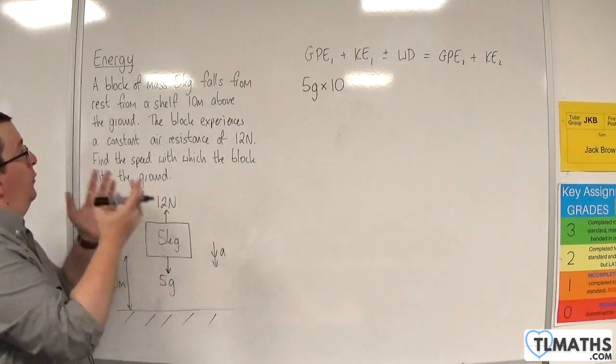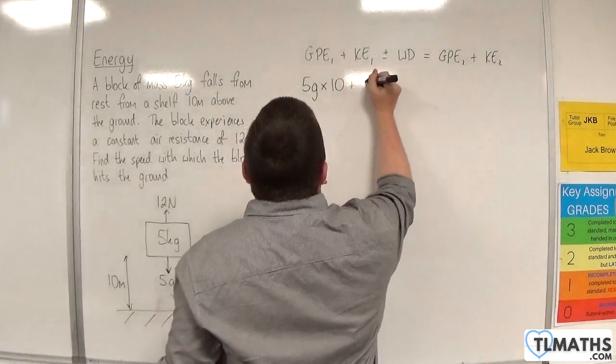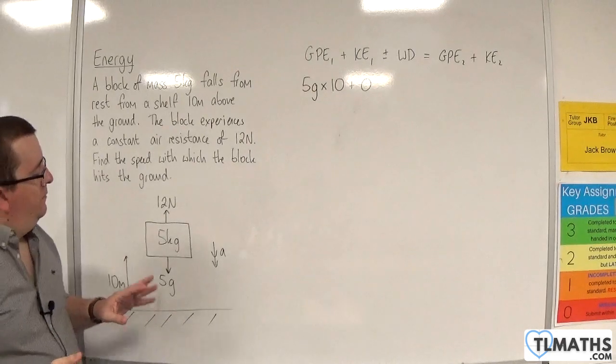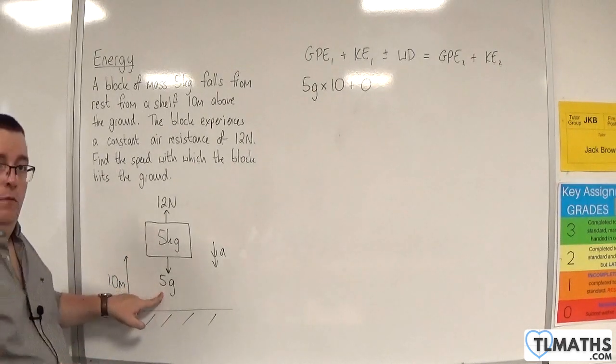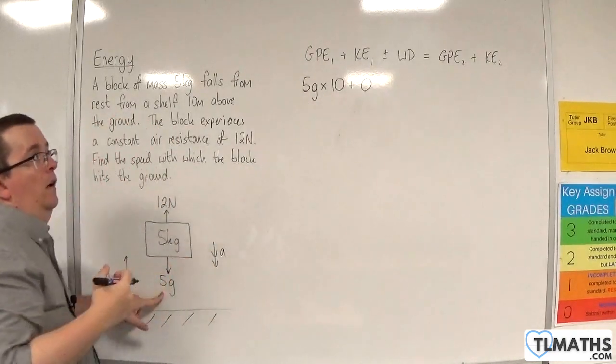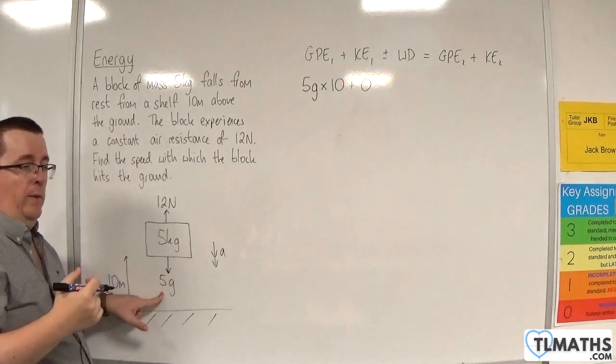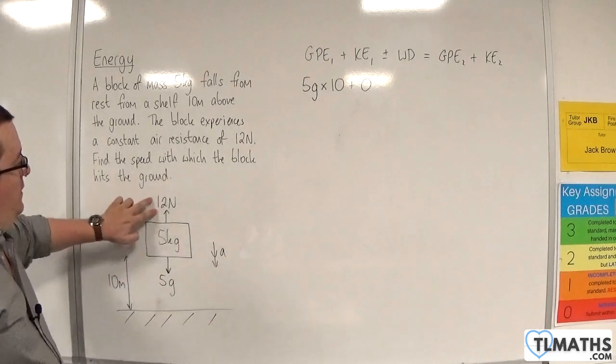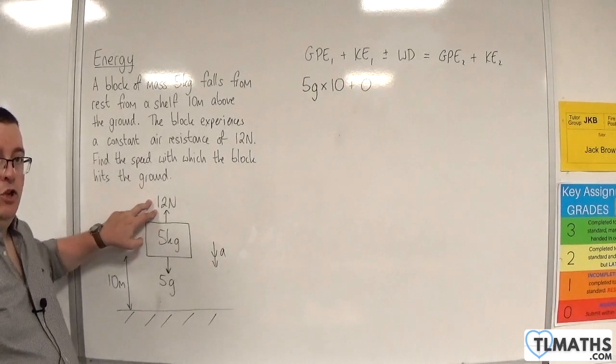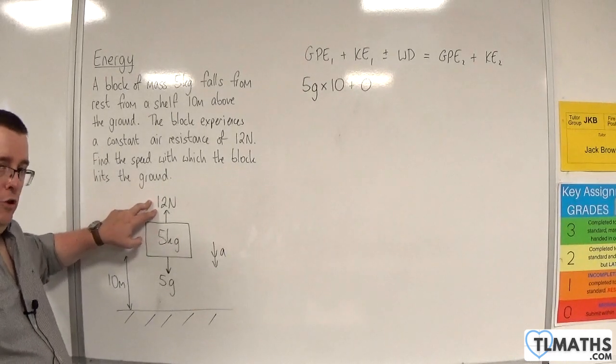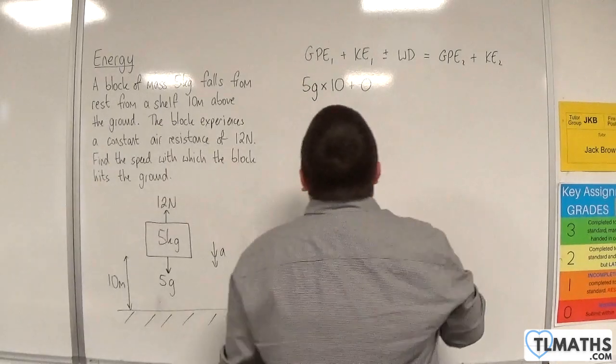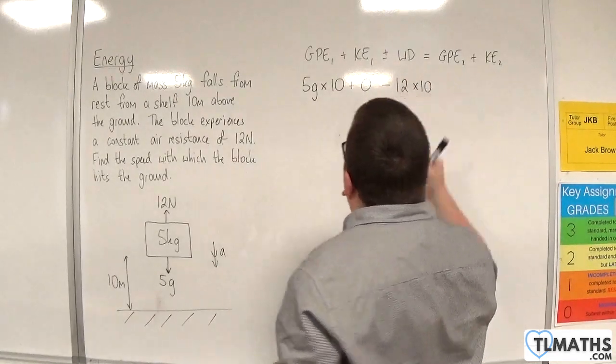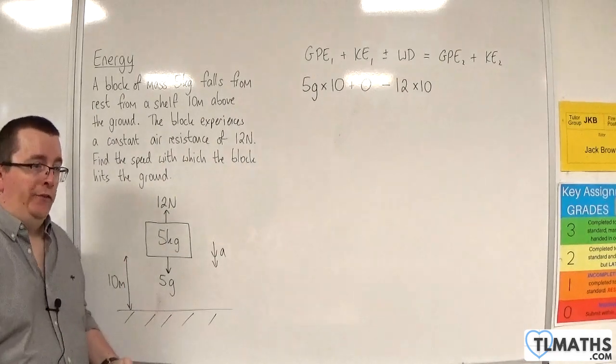Now, the initial kinetic energy, because it's falling from rest, means that that's going to be zero. Then we've got the work done. Now, remember, the weight is already included within the GPE that we've calculated there. So we don't need to work out an extra bit for the work done for weight. However, the air resistance is acting against the direction of motion. So we're going to have take away 12 times 10. So that is taking energy out of the system, hence it's negative.